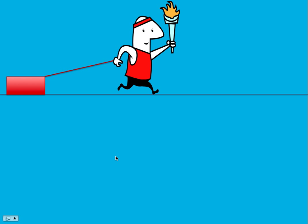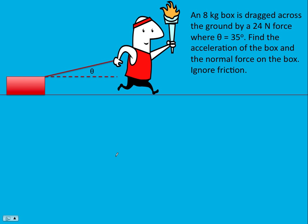We have a box being dragged along the ground. The box has a mass of 8 kilograms and there's a 24 Newton force being applied to it by that string or rope. The angle between the string and the horizontal is 35 degrees.